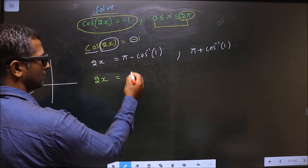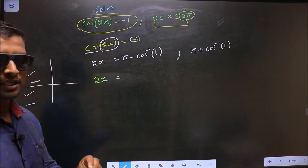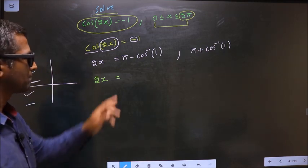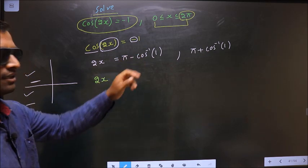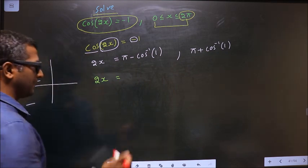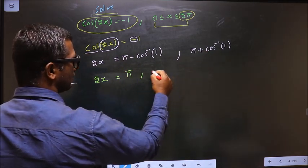2x equals... Before you calculate this, make sure your calculator is in radians mode. Now, put this in the calculator, you get π. Put this in the calculator, you get π.